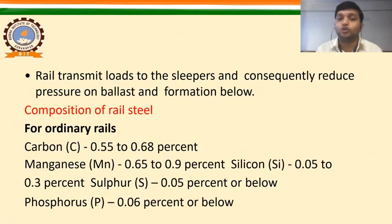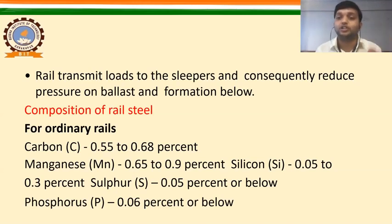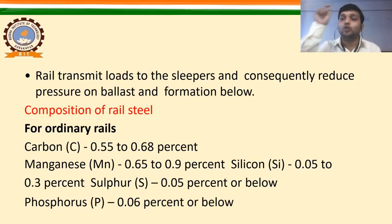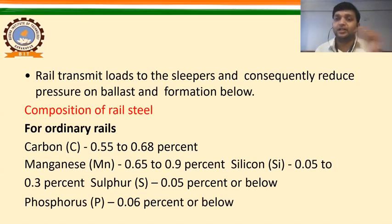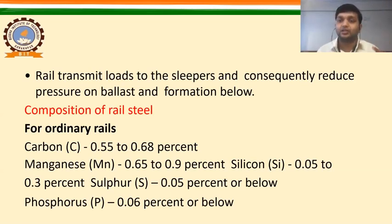Rail transmits the loads to the sleepers. Rails are acting as steel girders which are used to transmit the heavy axial load finally to the sleepers. Rail transmits the loads to the sleepers and consequently reduces the pressure on the ballast and formation below. The components of the track start from the rail, connected to the sleeper, then connected to the ballast.